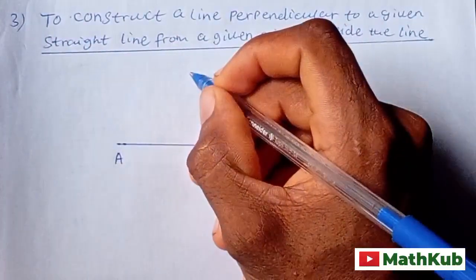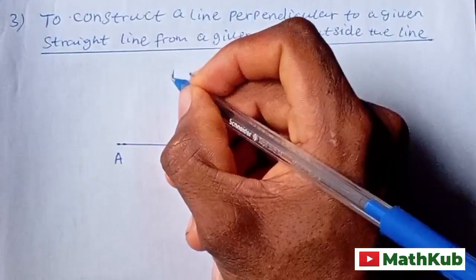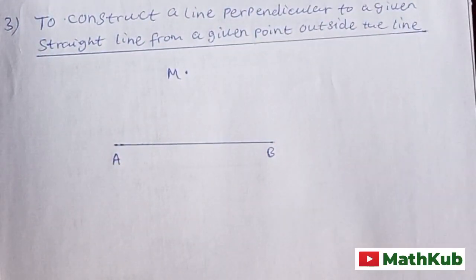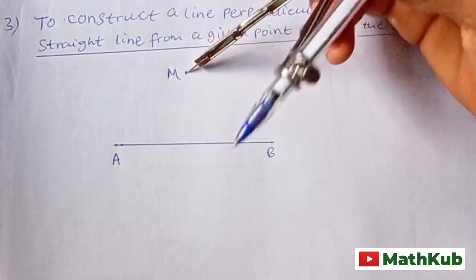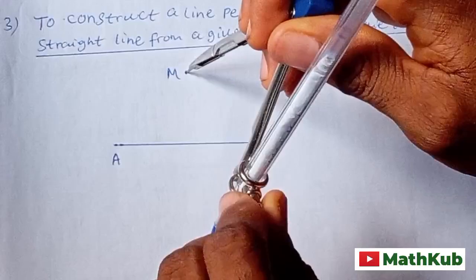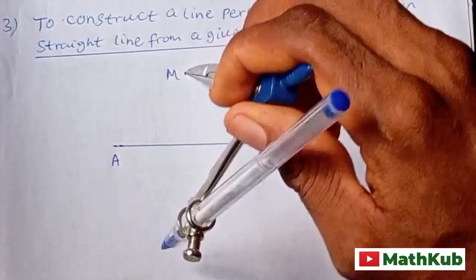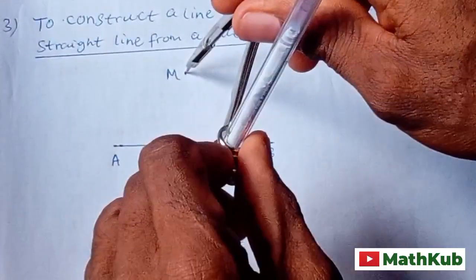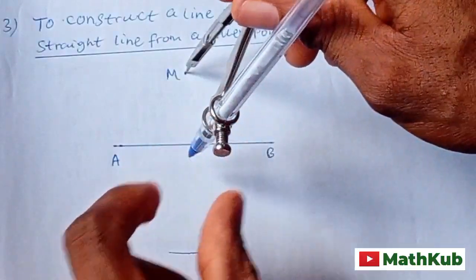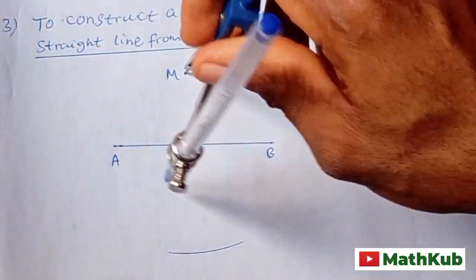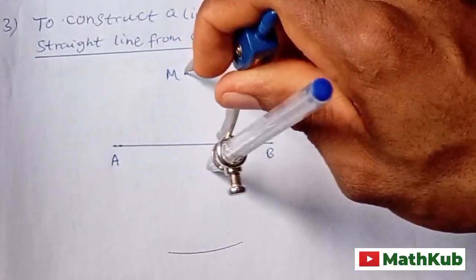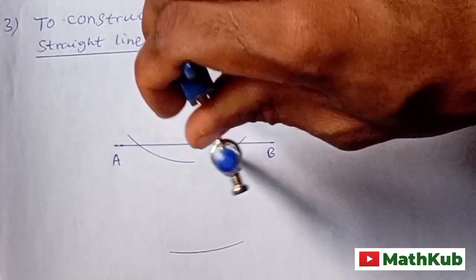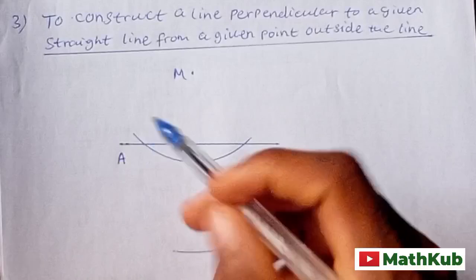Let's call it M. Then the first procedure: with center M and any radius, you draw an arc to cut AB. The arc cuts line AB at X and Y.